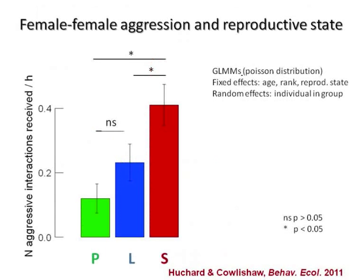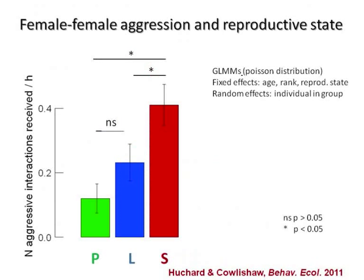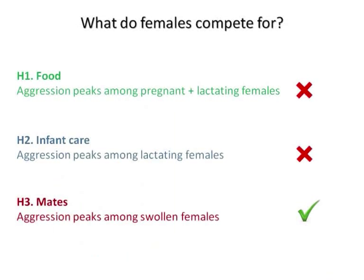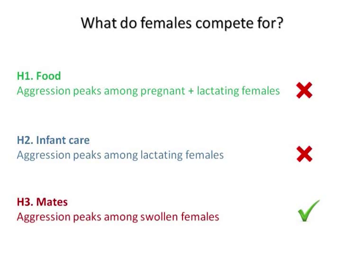I also looked at the amount of aggression received by one particular female on average during one hour of observation in relation to her reproductive state. Those females who are sexually receptive receive almost twice as much aggression as those who are lactating, and even more compared to pregnant females. So it seems that aggression is most important among swollen females, suggesting females might actually be competing over males.